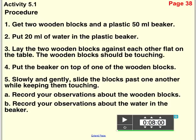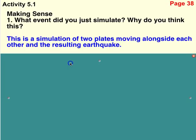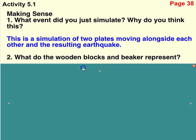Now let's look at the questions. We're going to modify the questions in your book to use the wooden blocks and water instead of gelatin and crackers. Number one says: what event did you just simulate, and why do you think this? Pause the video and answer it. Did you say that you just simulated two plates moving along each other? Did you say that you just simulated an earthquake? Those are both great answers. We just simulated an earthquake — two plates moving past each other. As the plates slip and lock up and then slip again, those are earthquakes. If the plates just naturally glided by each other and never got hung up, we wouldn't have earthquakes at all.